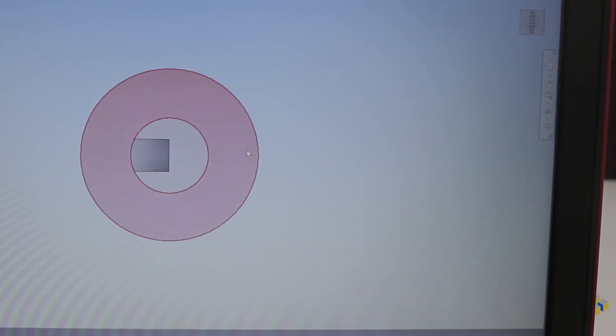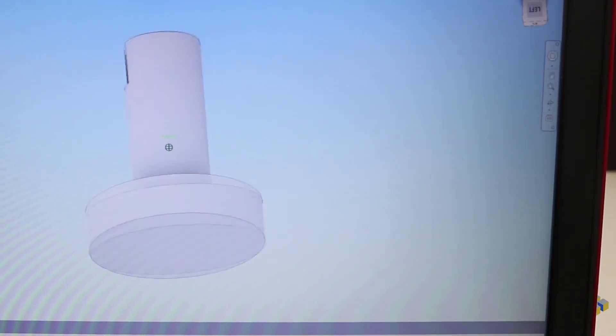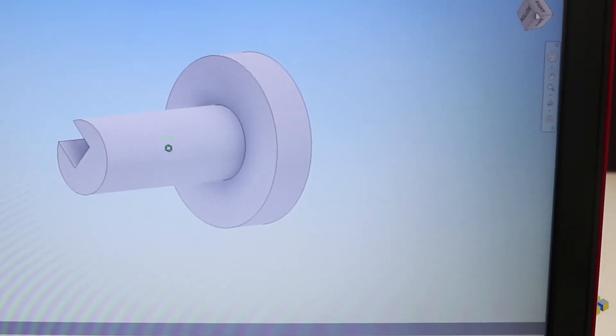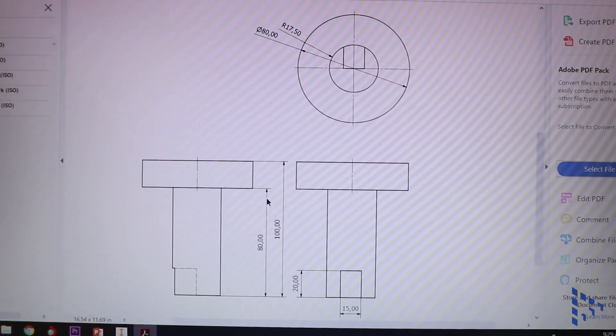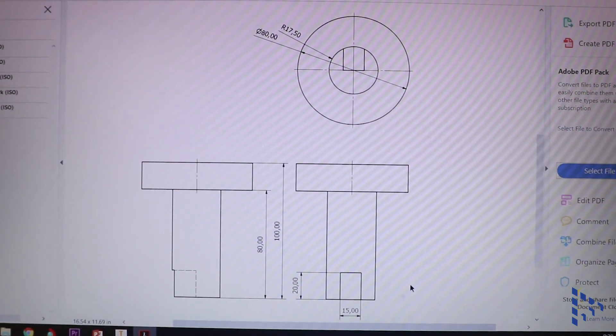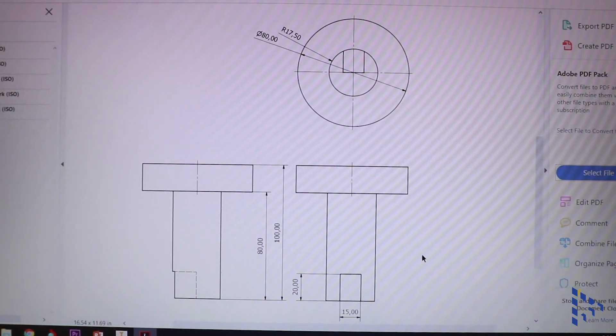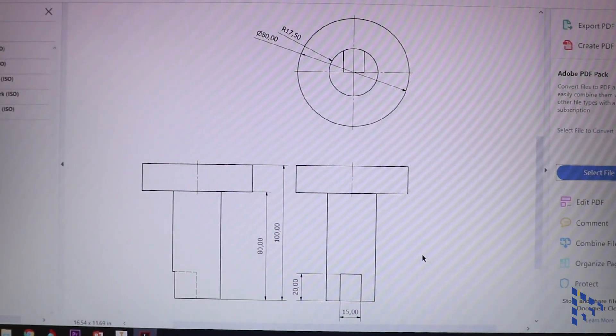This is the object in 3D. Note that the dimensions referring to the inner circle is a radius, R, as it is incomplete, whilst the outer circle is complete and can therefore be dimensioned with a diameter symbol.